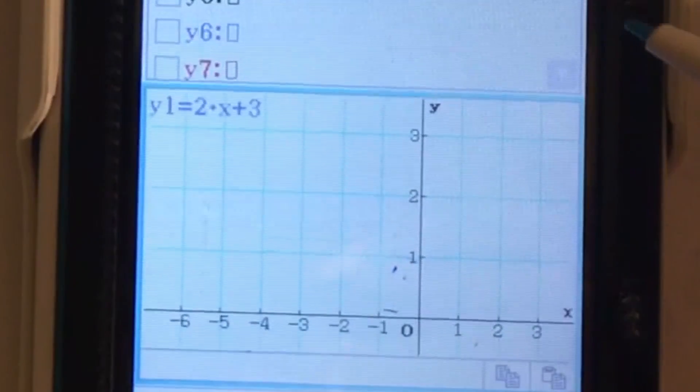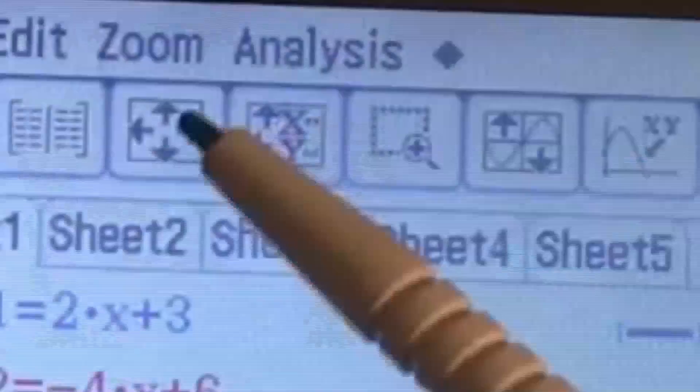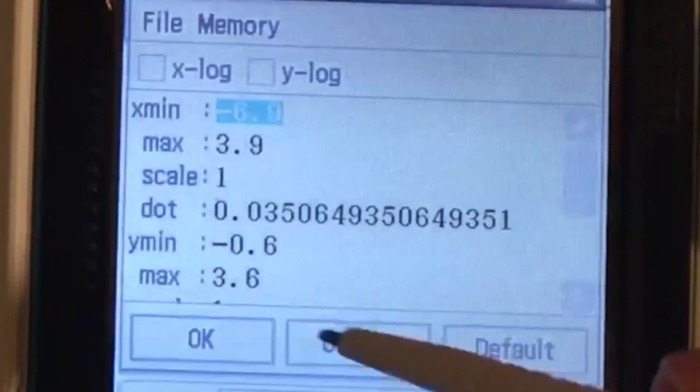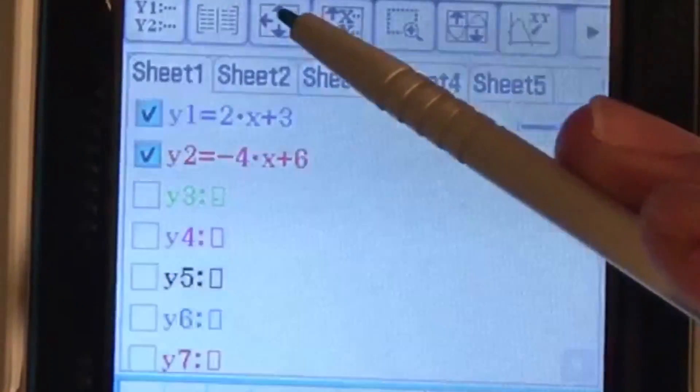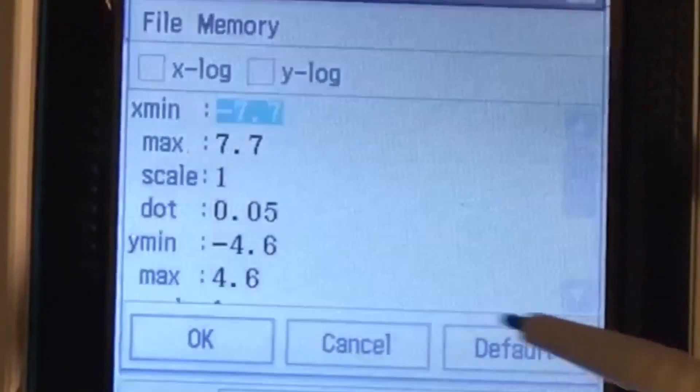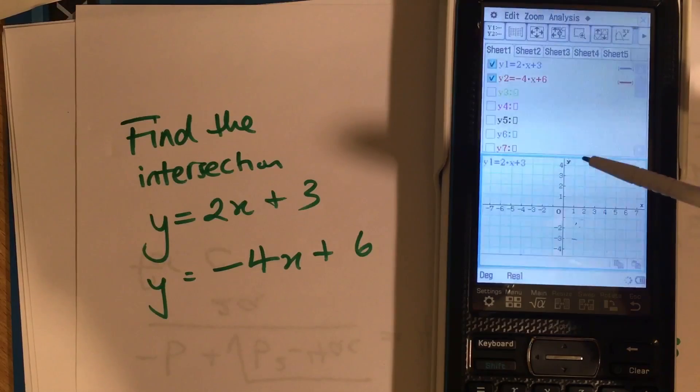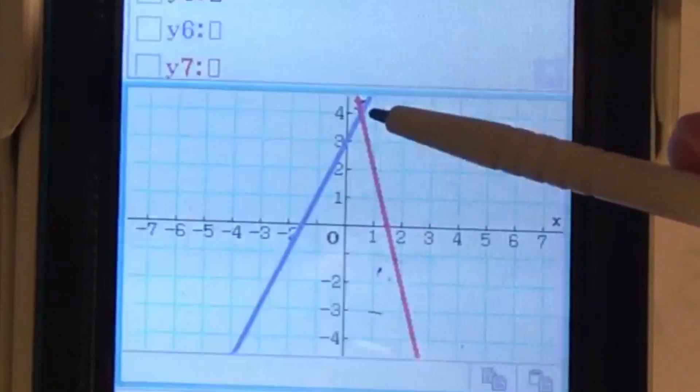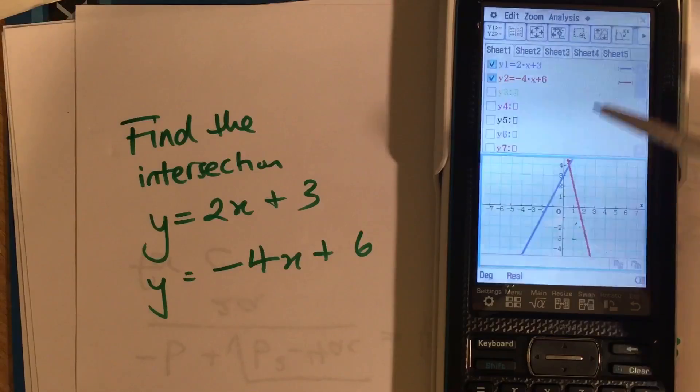Graph the two, and in fact what we might do is press the—just in case you didn't see me do that—I'm pressing the four arrows there, getting default. And you can see there where I've got a point of intersection.